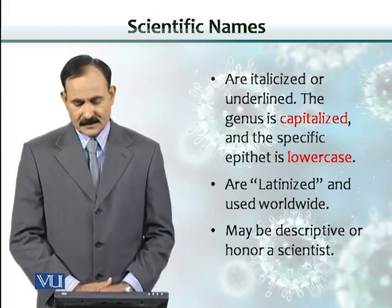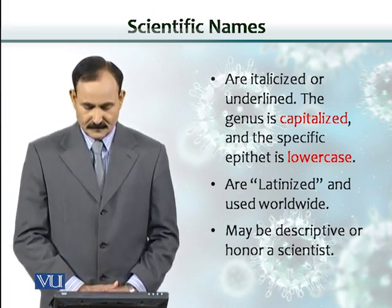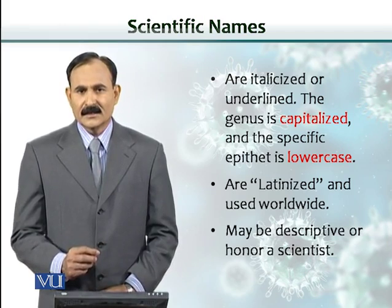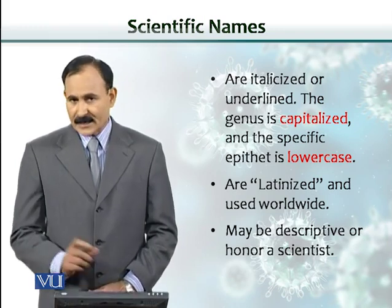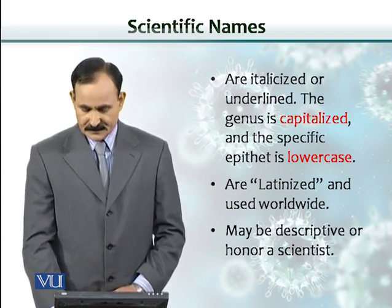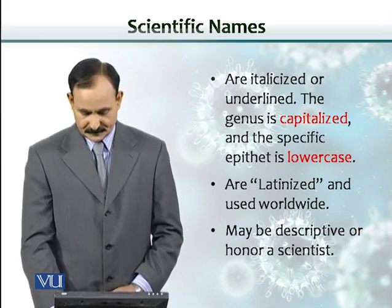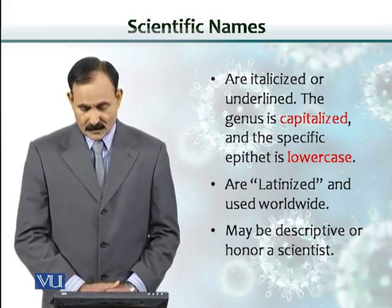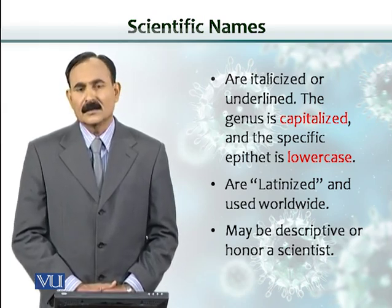Scientific names are italicized or could be underlined. The genus is capitalized — the first letter of the first word is capitalized — and the second part of the name is lowercase. They are Latinized and used worldwide, so everybody knows them. The name may be descriptive, or could honor a scientist.